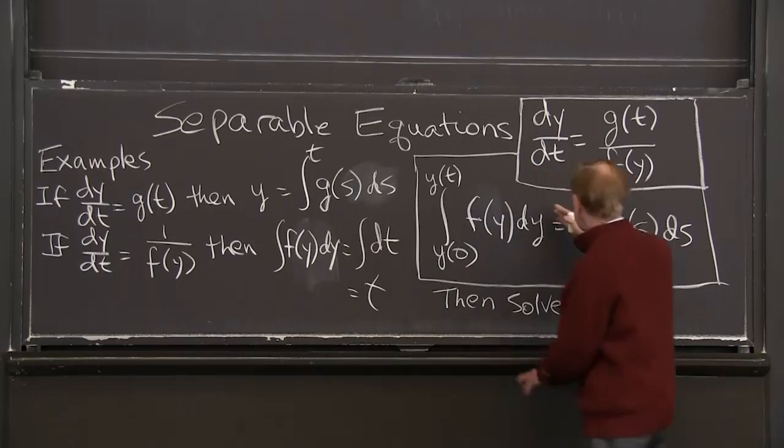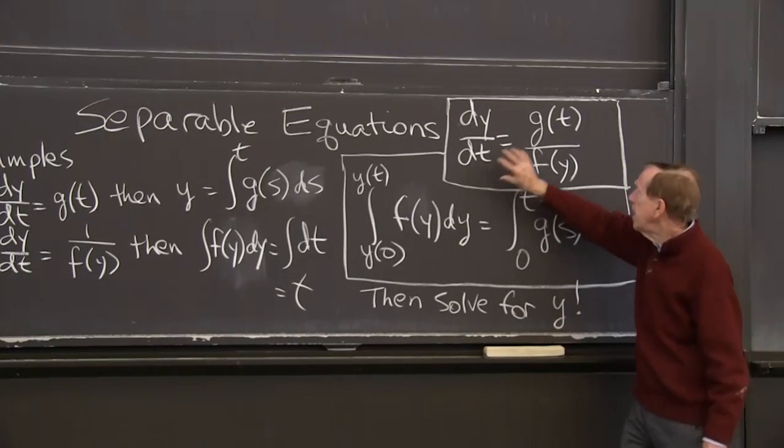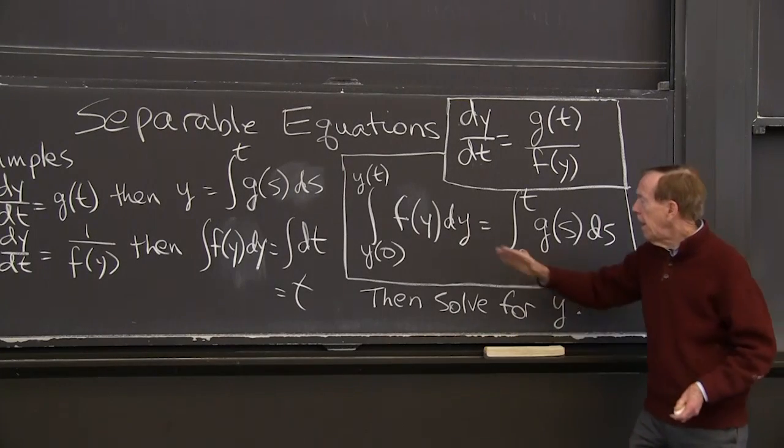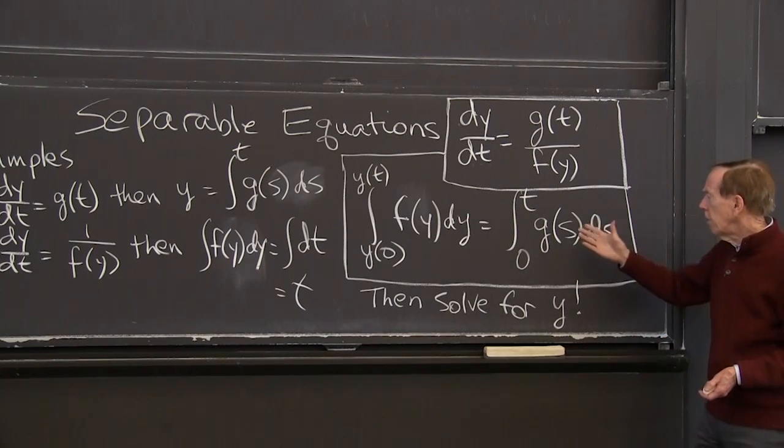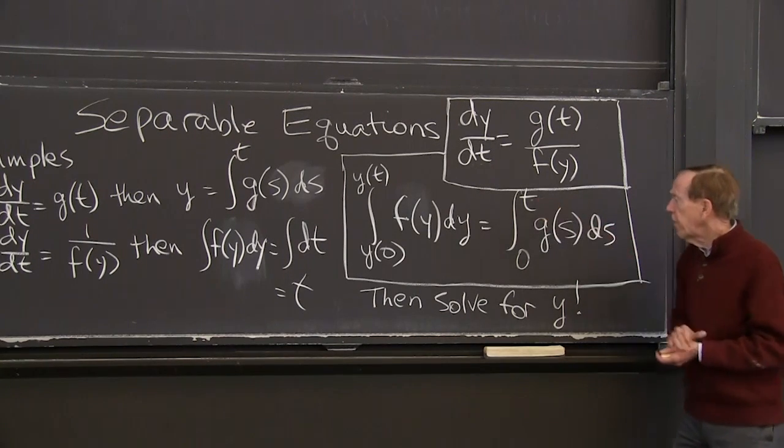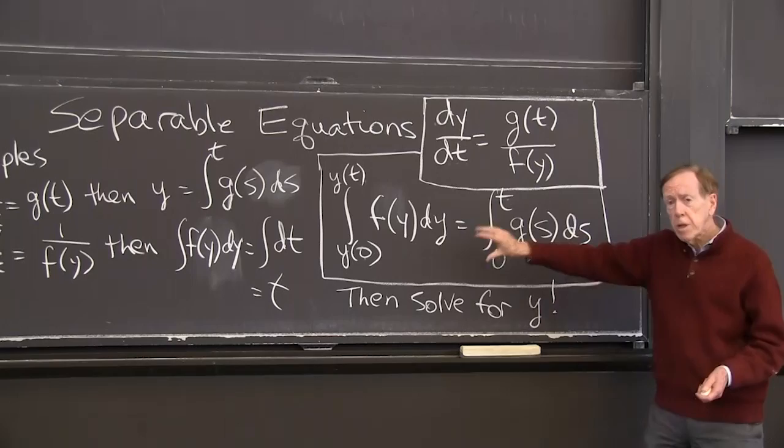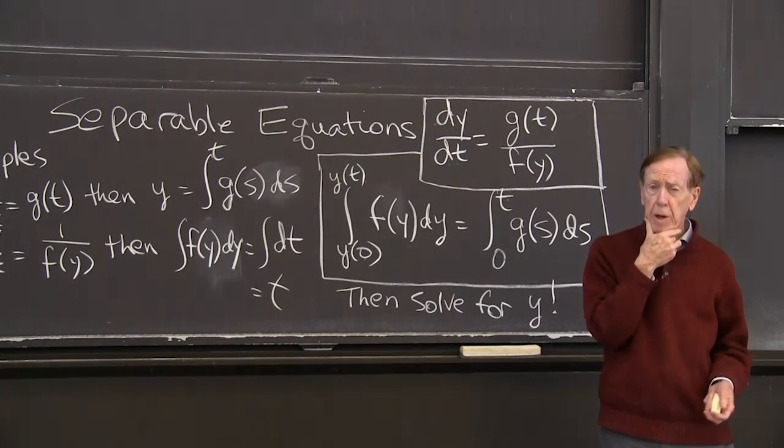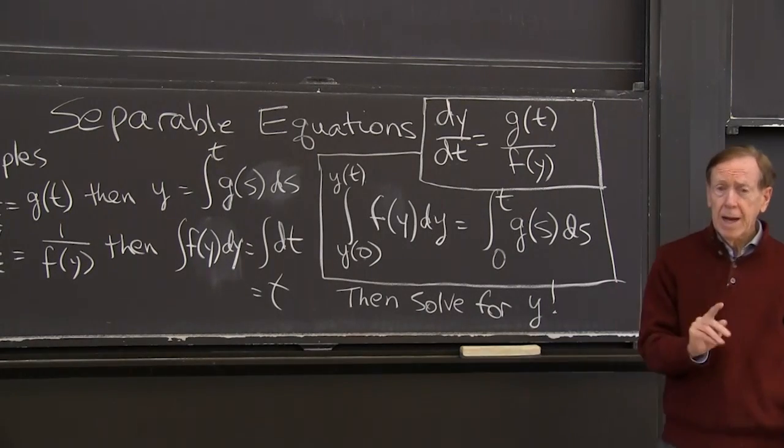But the point is, with y and t separate, we just have integration to do. And here's the case when there's both a g of t and an f of y. Then let me just emphasize what's happening here. The f of y, I'm moving up with the dy. The dt, I'm moving up with the g of t dt. So I have g of t dt equals f of y dy. And I integrate both sides.